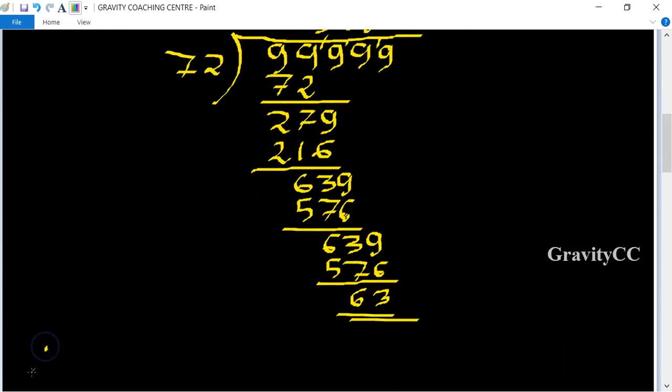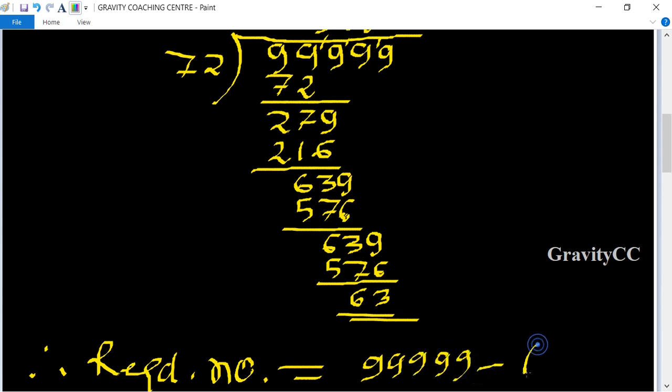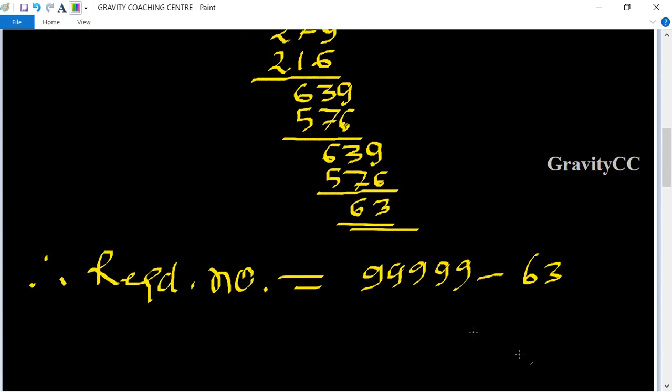So therefore, the required number equals 99999 minus 63, which equals 99936. So 99936 is the required number which is exactly divisible by 12, 18, and 24.